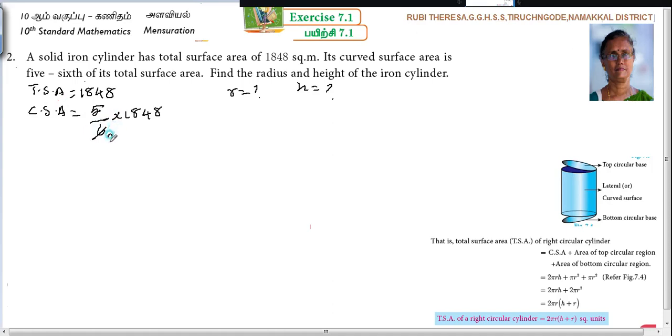Now I am going to find out curved surface area of a cylinder. Calculating 5/6 of 1848 through prime factorization: dividing by 3, 3, 2, 2, 7, 11 to get 5 into 308. So this equals 1540 square meters, which is 2πrh, the curved surface area of the cylinder.